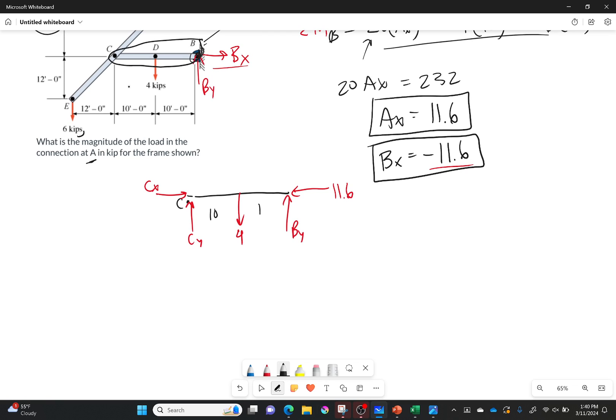Now for this new free body diagram, I still have three equations. Let me put my numbers in so I actually know the distances. This is 10 and that is 10. So let's do sum of the forces in the X direction first. That's got to be equal to 0. It's equal to Cx minus 11.6. Those are the only two X forces. And so what I get then is that Cx will be equal to 11.6.